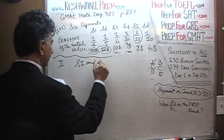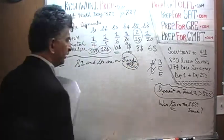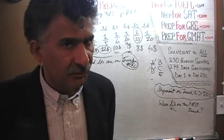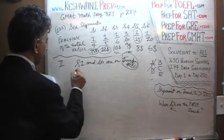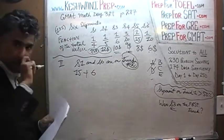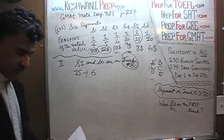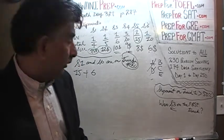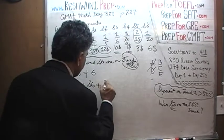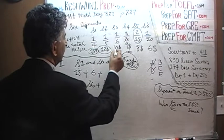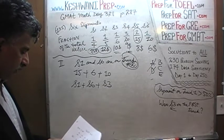Statement 2 tells us that S1 and S6 are on truck number 2. Pay attention — this time they give us information about the 2nd truck, not the 1st truck. S1 is $15 and S6 is $6. So we are going to look at a couple of scenarios. Is it possible for S3 to also be on this truck? S3 is $10.